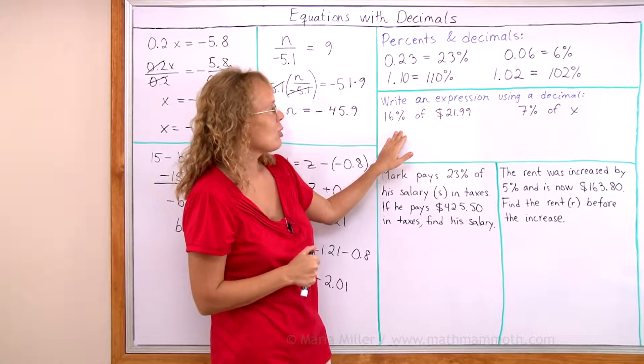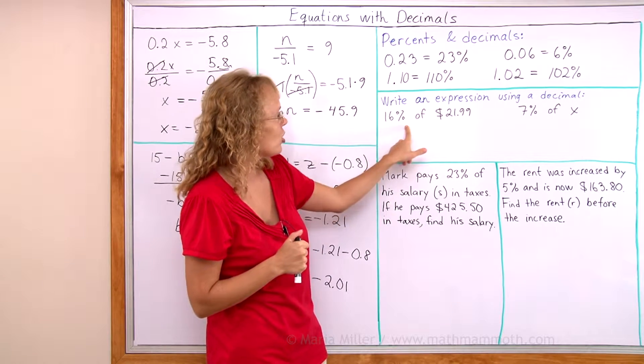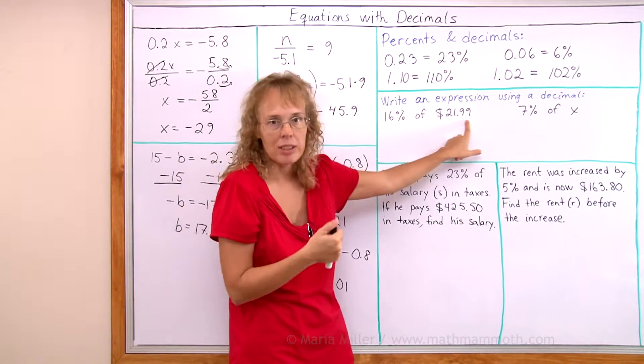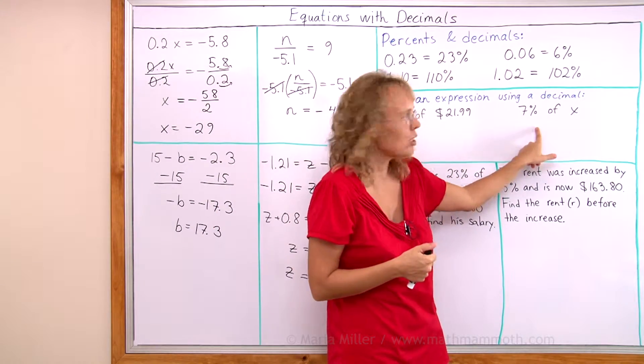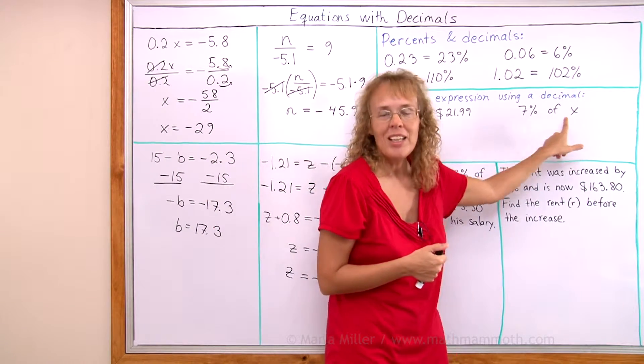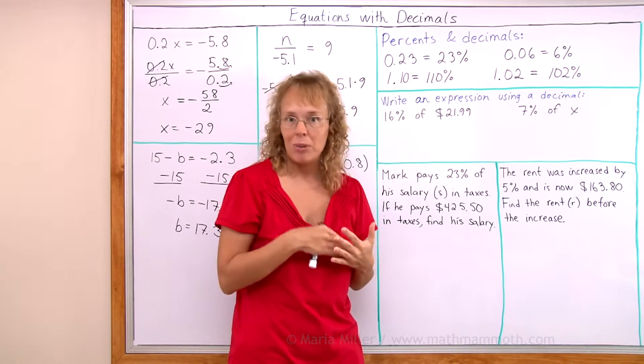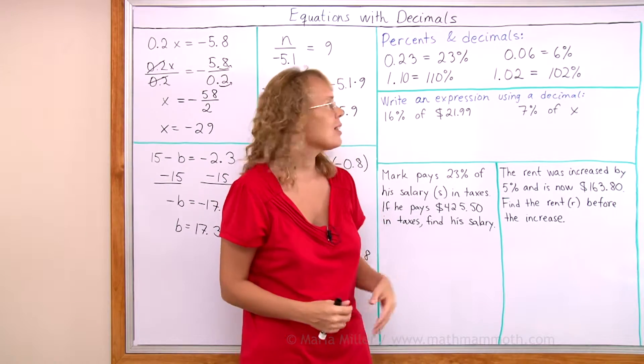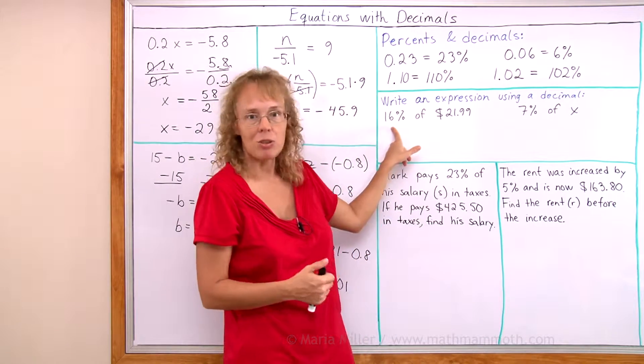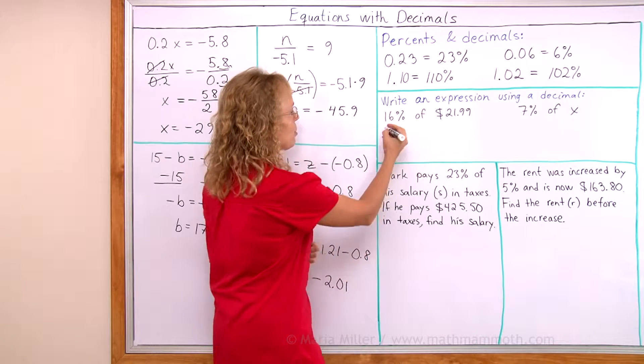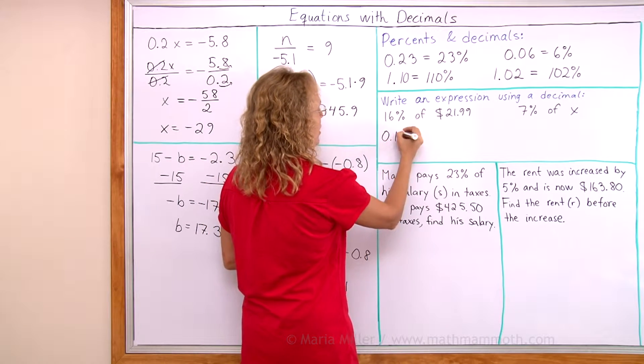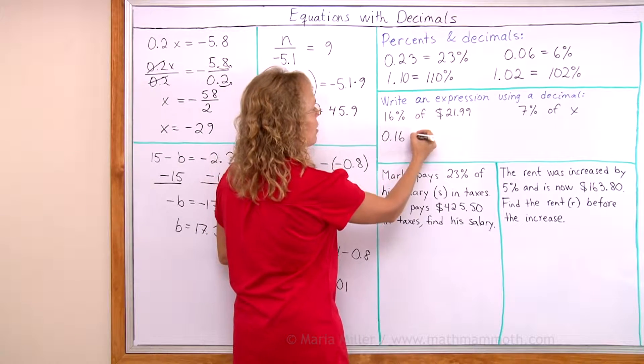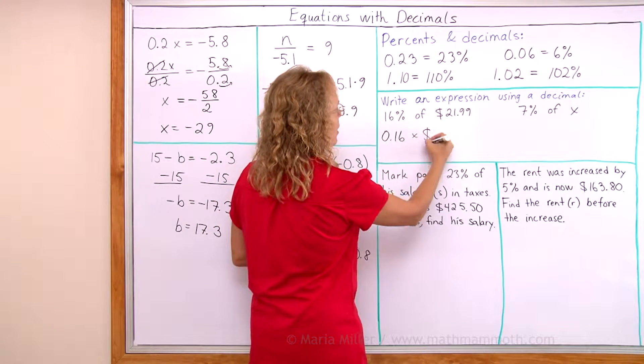Write an expression using a decimal. I have a percentage of some quantity, or a percentage of an unknown. This 'of' translates into multiplication. And then we will write this using a decimal. So 16% is just 0.16, sixteen hundredths, and this is now multiplication.